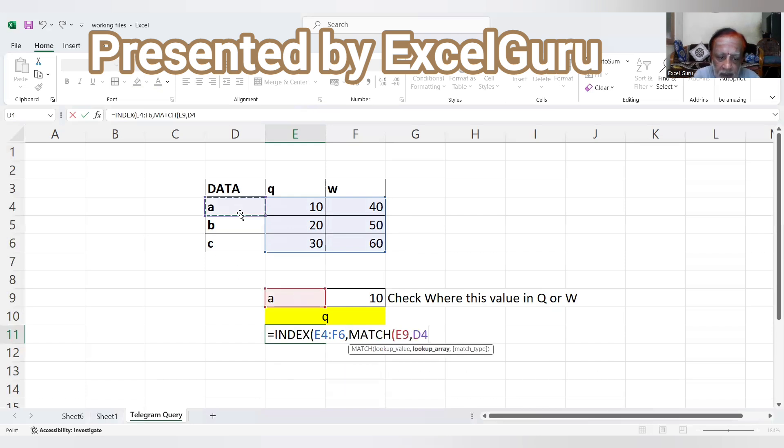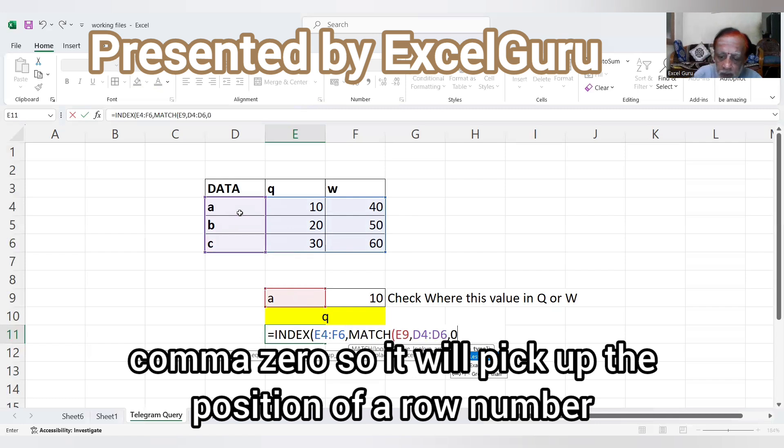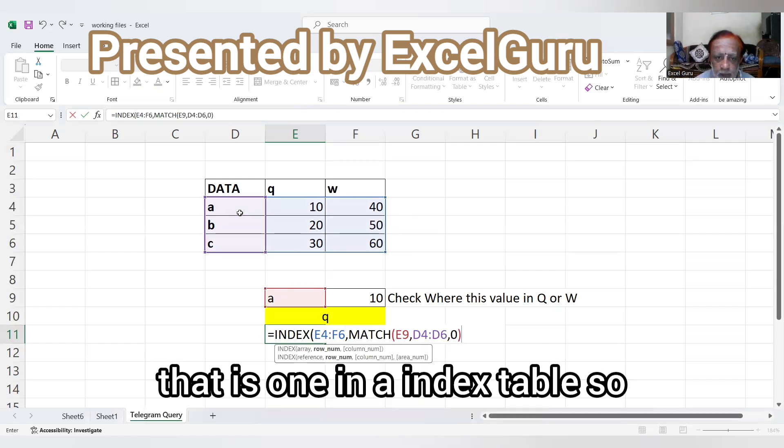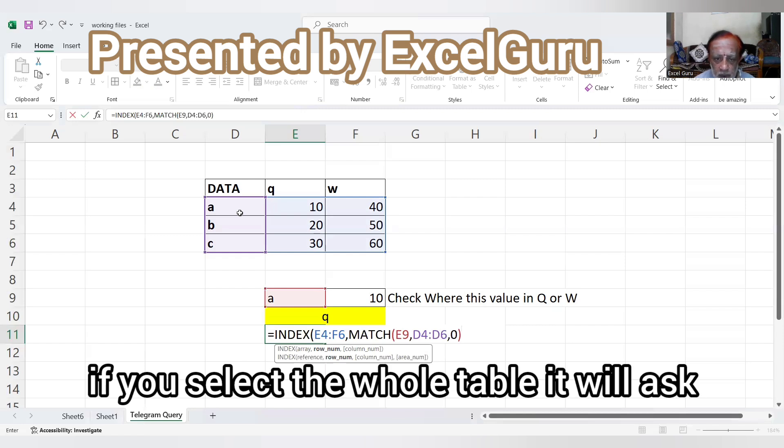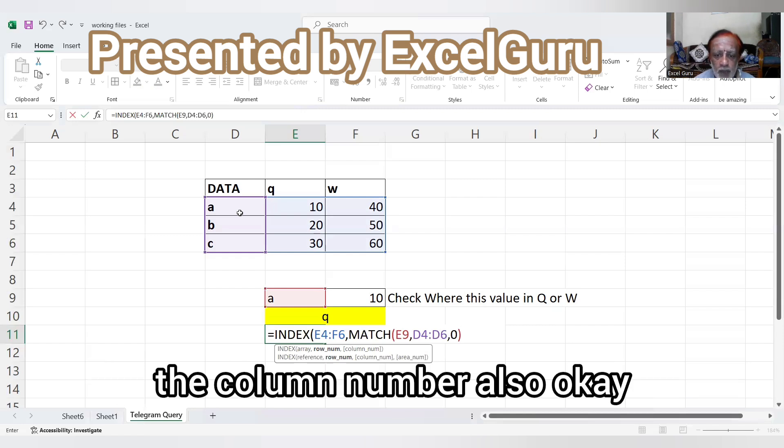And what will be the row number? So I'll use the MATCH function to get that row number, comma, and here is the thing. Comma zero. So it will pick up the position of a row number, that is one, in the index table.